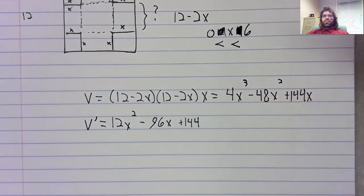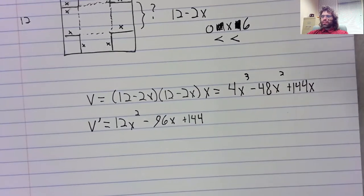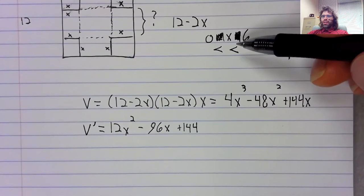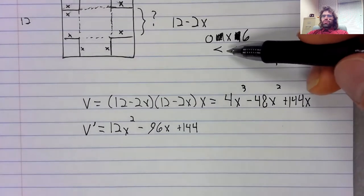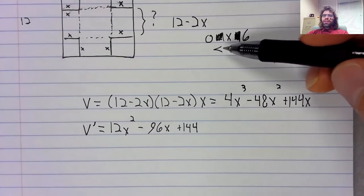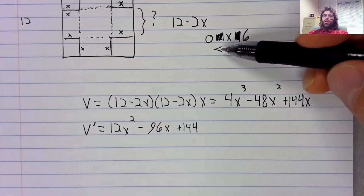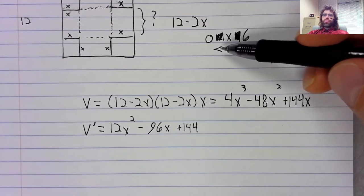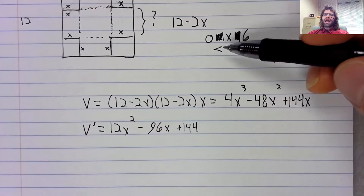The bad news is that once again, we're not really in any of the situations we've learned how to deal with. I mean, this is not a closed interval. x can't be 0. If x were 0, we wouldn't have any flaps. There wouldn't be a box.